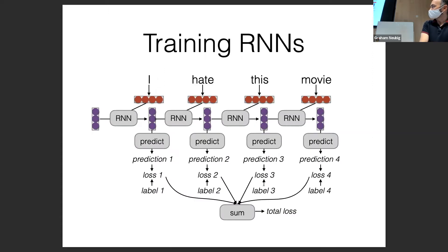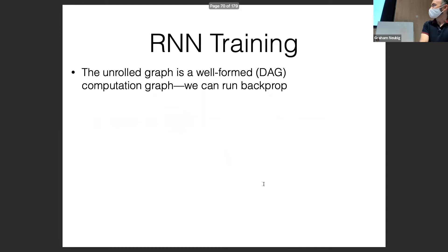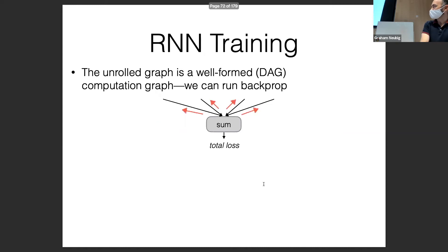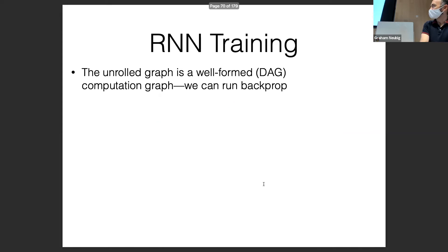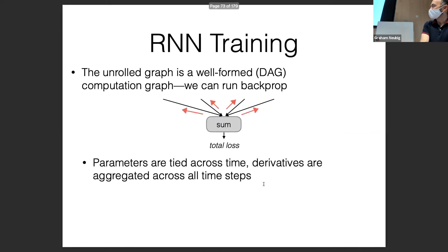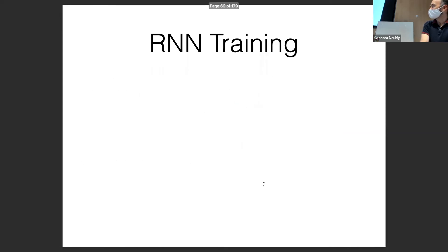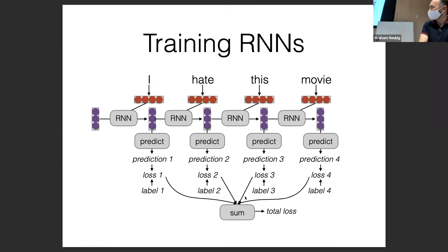Because the unrolled graph is a directed acyclic graph, training is basically the same. We calculate the total loss and backpropagate through the graph — all the way back through each RNN step. We can run the forward and backward algorithms just as we otherwise would.